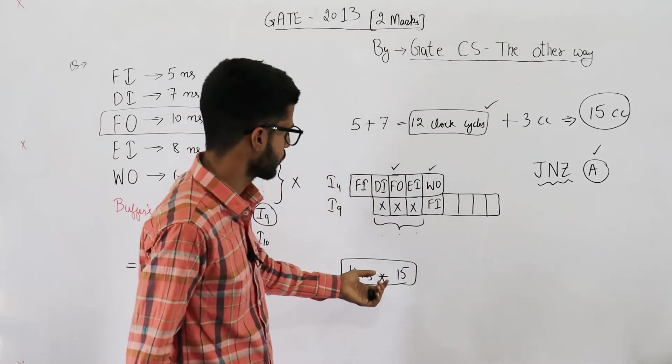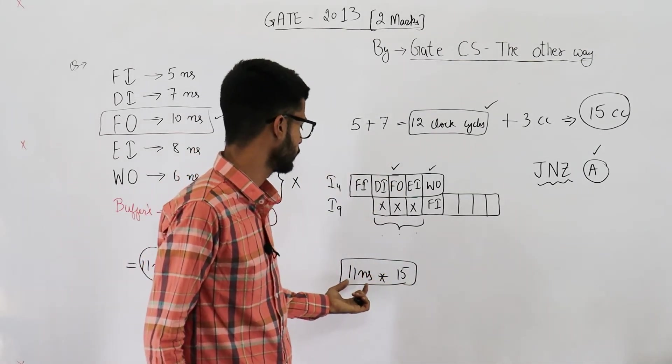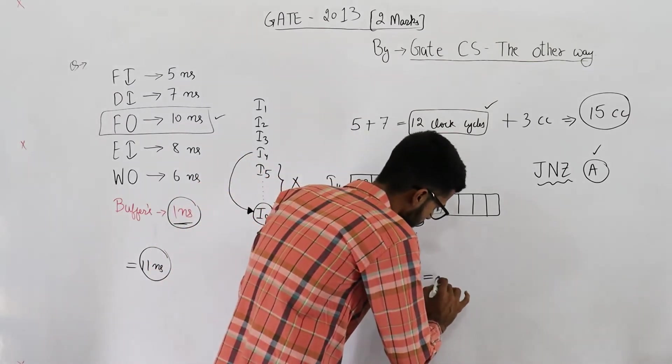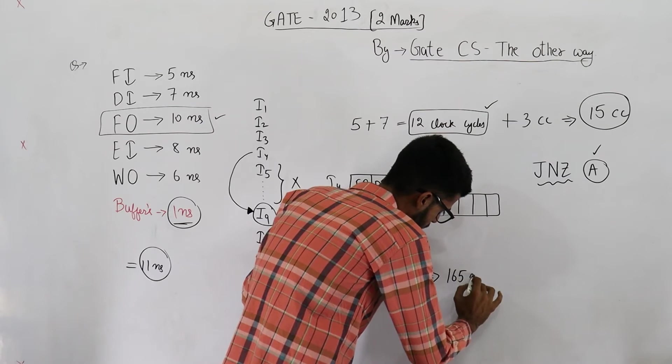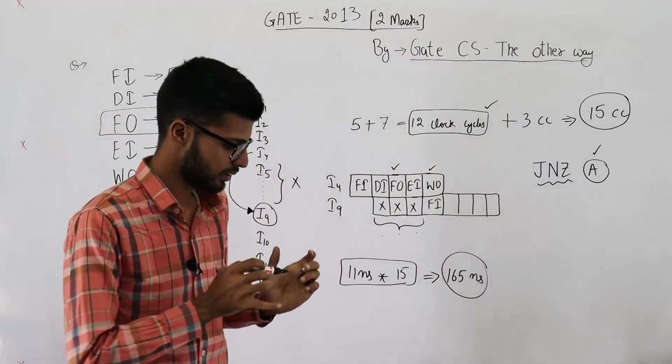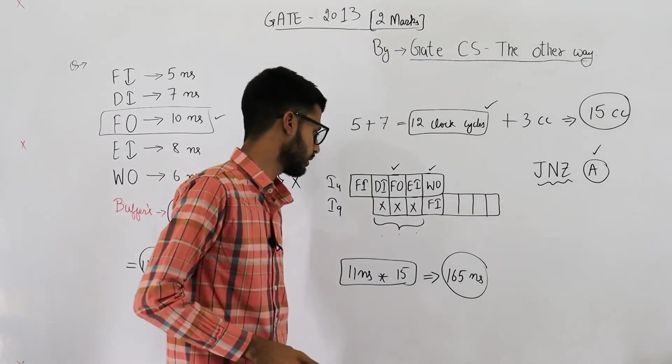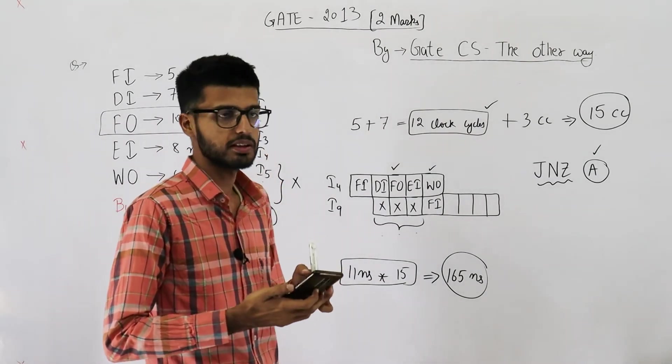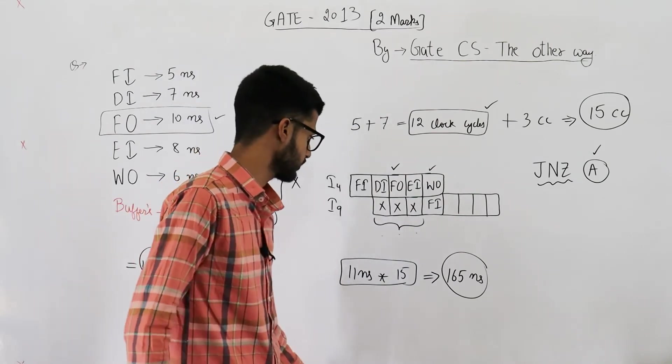So this comes out to be 15 into 10 is 150, plus 15 is 165. This is your final answer. 165 nanoseconds. Let me see if it's present in the options. Yeah, option B is your answer. 165 NS.